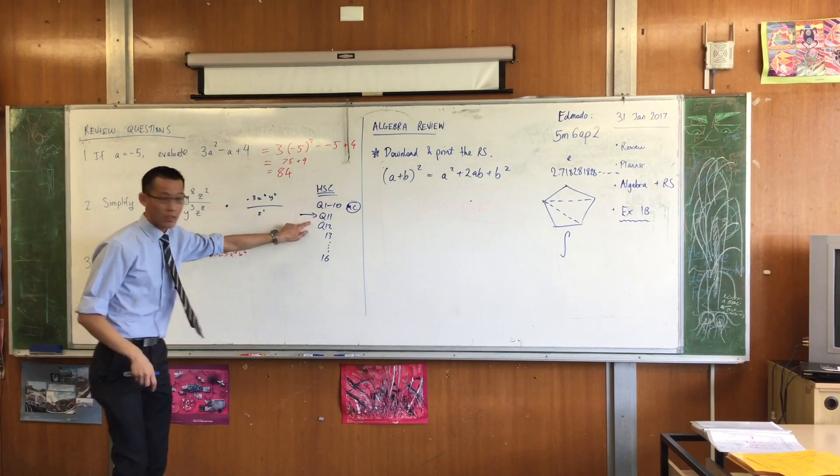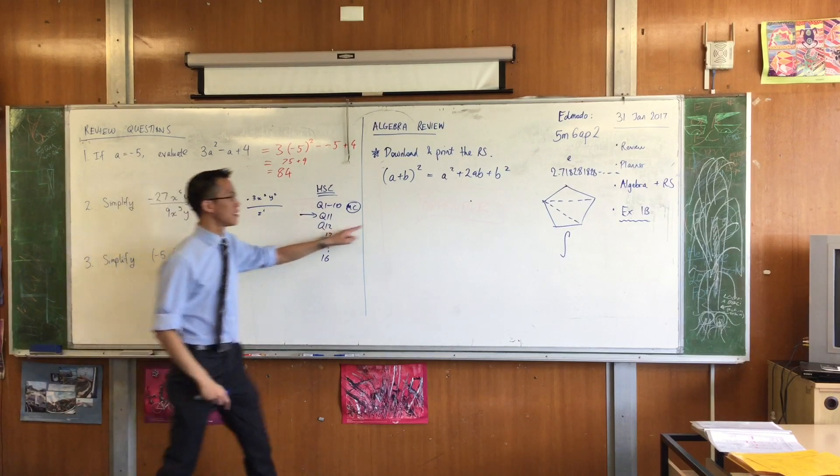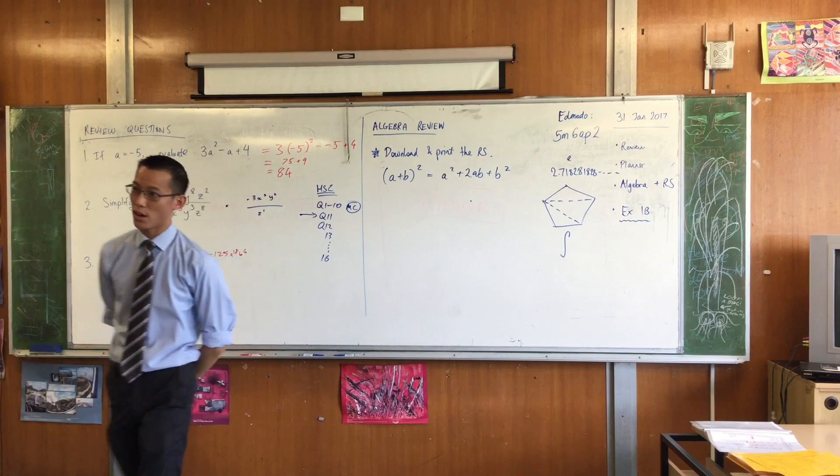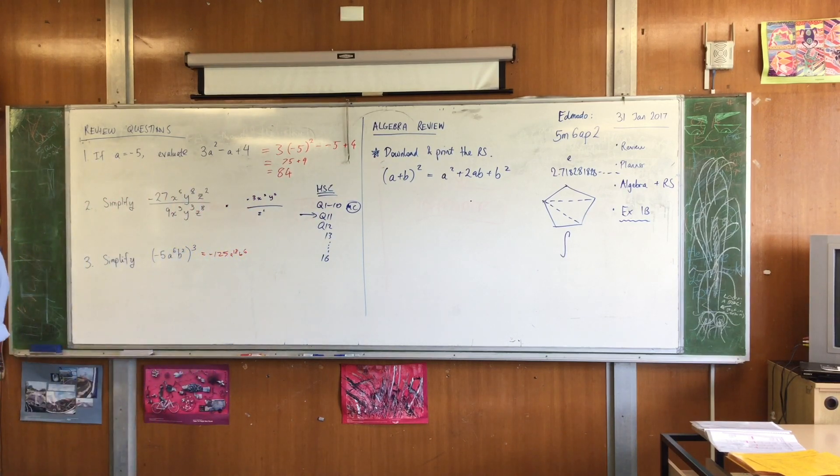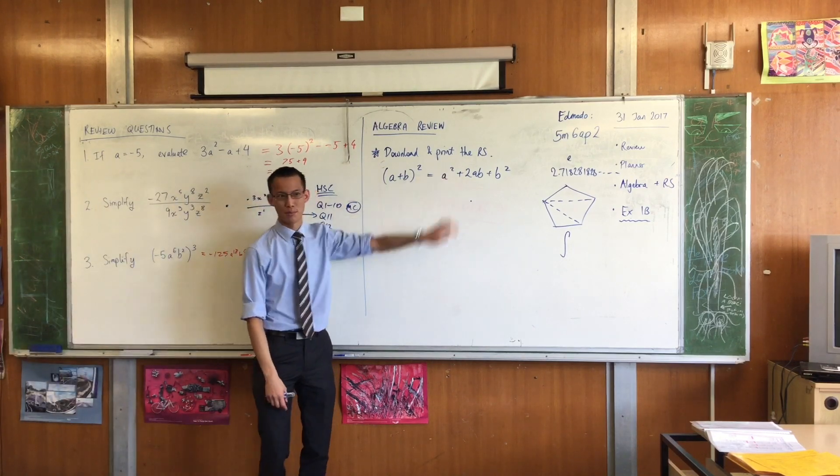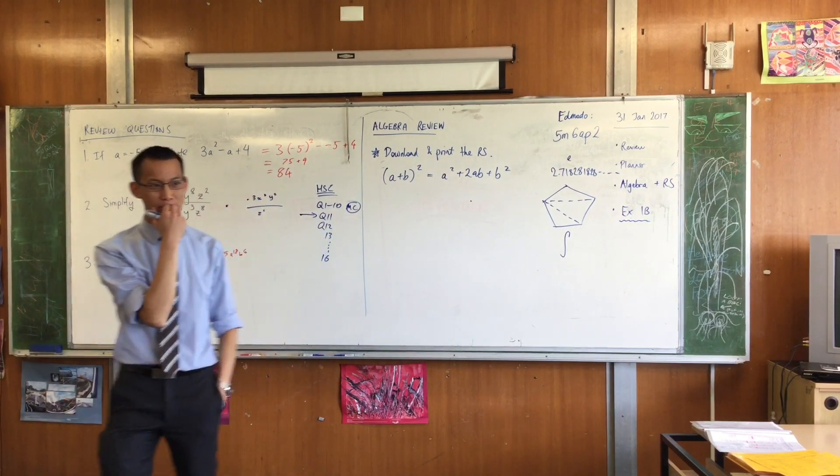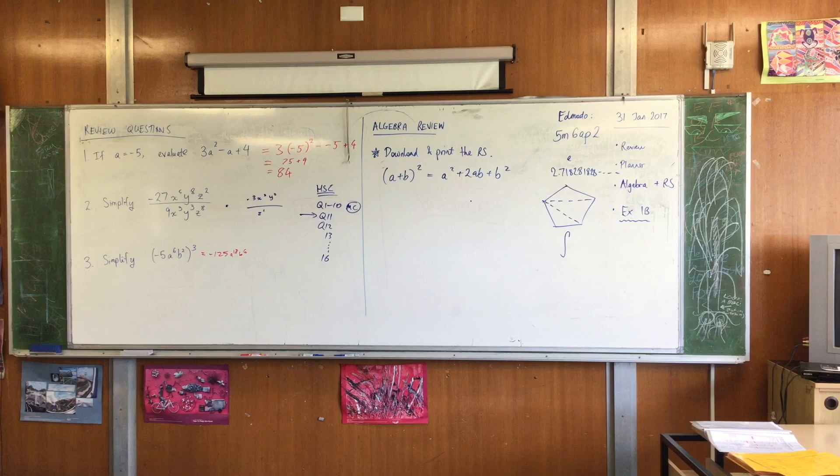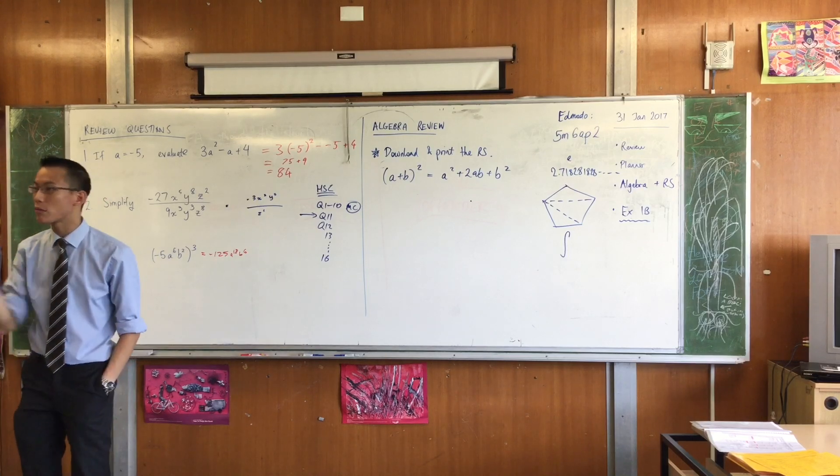But question 11, in the HSC, has questions like this. And people, year 12, 17 and 18 year old students who've been seeing these things for years, still get them wrong. Anyone want to suggest to me why, how on earth, people like us could mess up something so simple? Any thoughts? Because I overthink it. Okay, number one, you overthink it. You're like, ooh, this is the HSC. It looks easy, I must be doing something wrong. That happens? Yes, good.